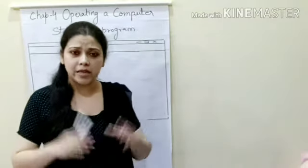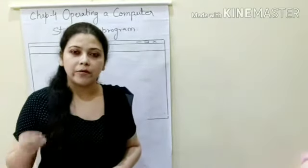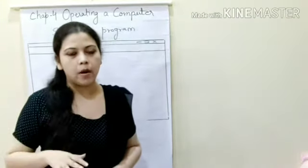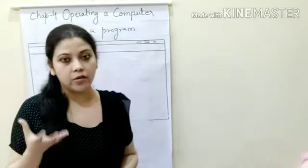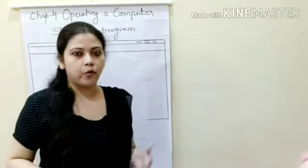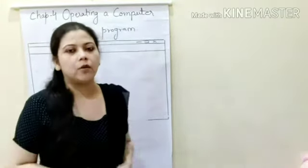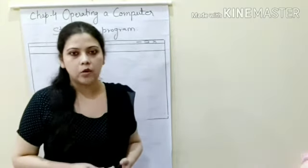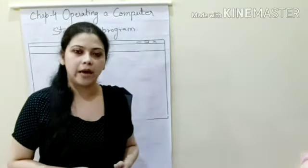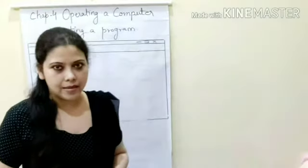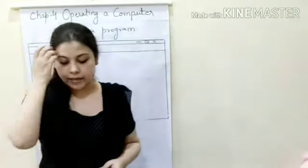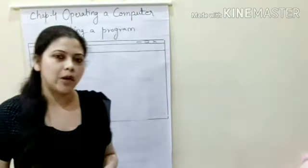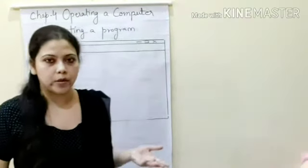Now children, when the desktop is open, you will find small pictures on the desktop, or you can see folders. Different folders are arranged on the desktop. And what are those pictures or folders called? They are called icons. All these things you have learnt in the previous video.